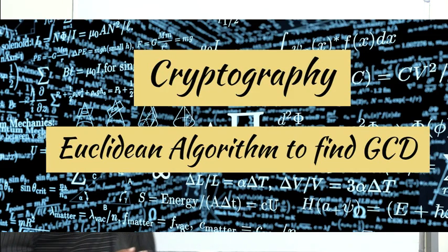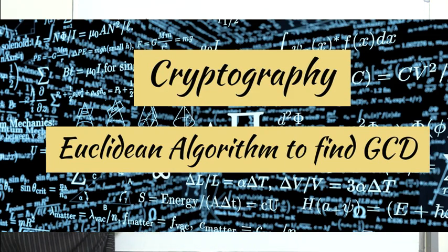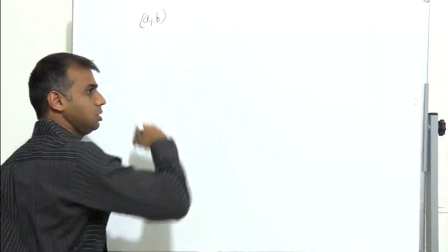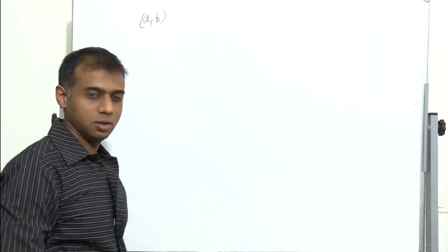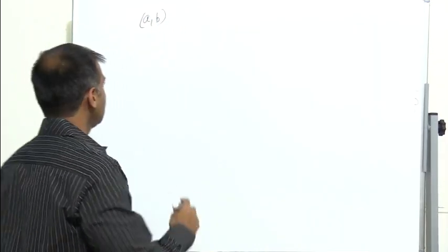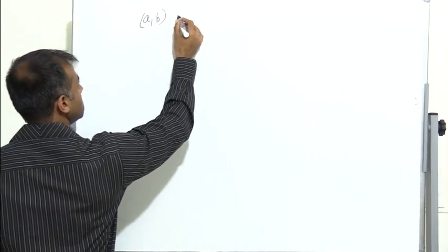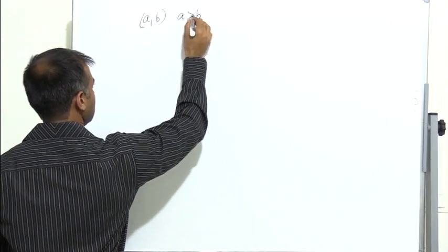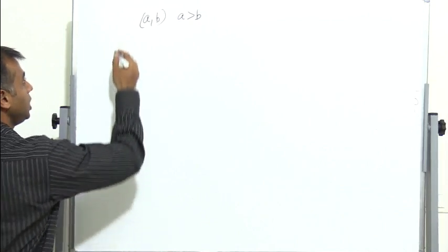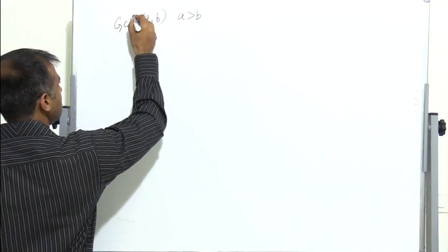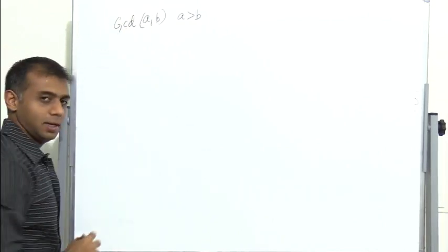In this session, we will see how we can find the GCD of two numbers A and B using the Euclidean algorithm. Let us consider two numbers A and B where A is greater than B, and we need to find the GCD of A and B.